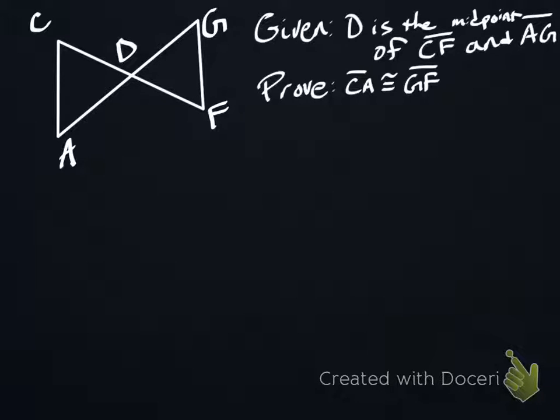We're also told to prove that this implies that CA is the same length or congruent to GF. So let's try to dive in and see how we can prove this. Notice this is not a triangle congruence proof.